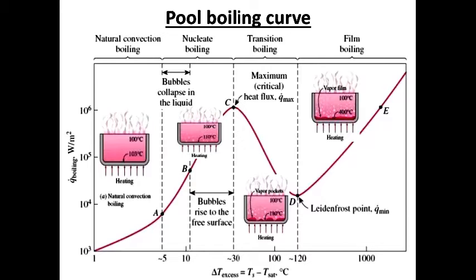Natural convection boiling, nucleate boiling, and film boiling are shown on a typical boiling curve of saturated water at atmospheric pressure. In natural convection boiling regime where the delta T excess is less than 5 degrees Celsius, heat transfer from heating surface to liquid is by natural convection only. When excess temperature increases beyond 5 degrees Celsius, the nucleate boiling regime starts at point A.